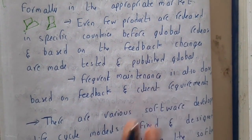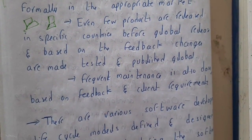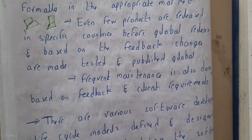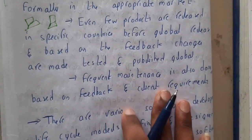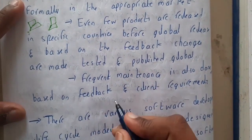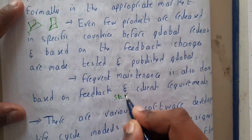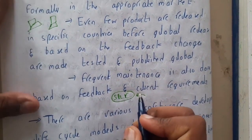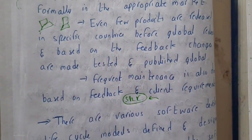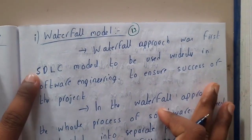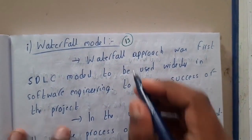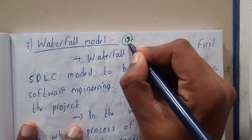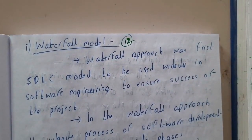I hope everyone got a clear idea. In the next lecture, we will be going through some process models. Till now we discussed the basic SDLC model — every process follows these six steps, which are detailed in some process models and shortened in others. In the next lecture, we will start with our first process model: the waterfall process model. Let us meet in the next lecture. Thank you, thanks for watching.